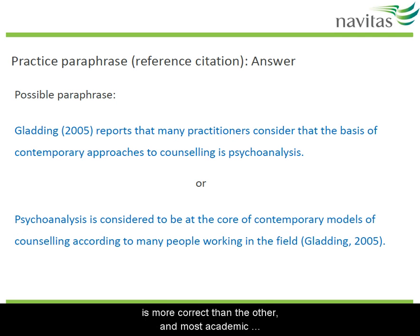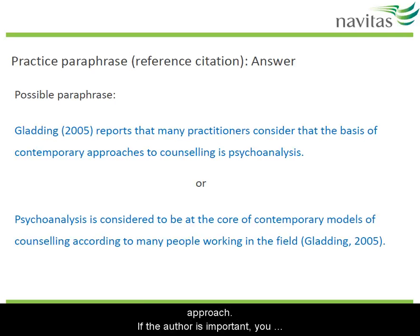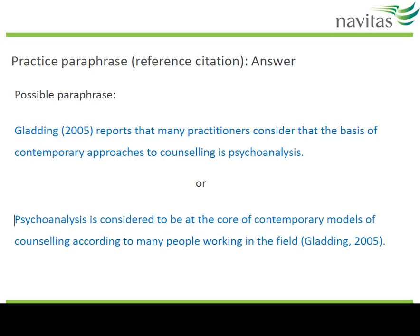Neither of these approaches is more correct than the other, and most academic authors vary which one they use within one document. However, if the information is more important than the author, you may choose to use information first. If the author is important, you may choose author first, but that's not a hard and fast rule.